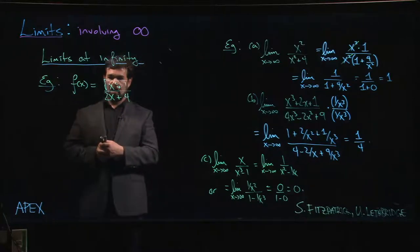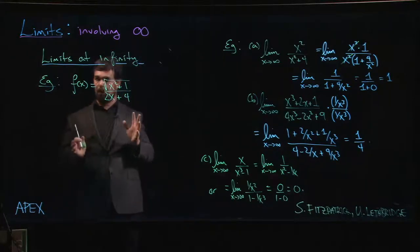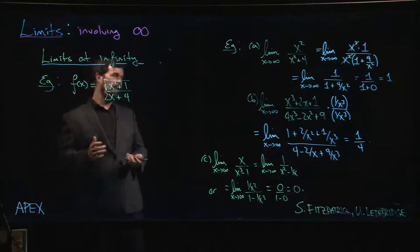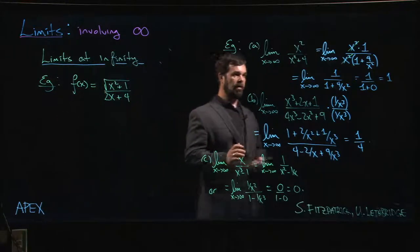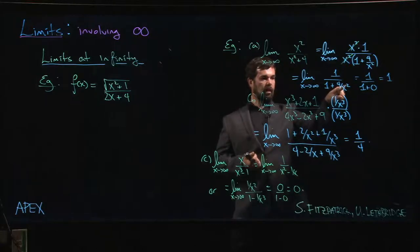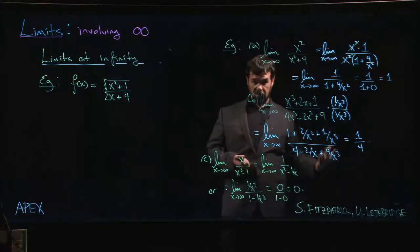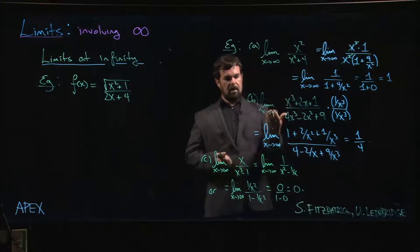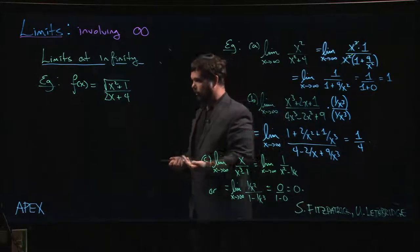The other thing is you've got to be a little bit careful about signs here. In these examples with rational functions, we rely on the fact that these terms go to zero, and it doesn't matter whether x is going to plus infinity or minus infinity. One over any power of x is going to be zero, so I get the same answer for x going to minus infinity that I do when x is going to plus infinity.